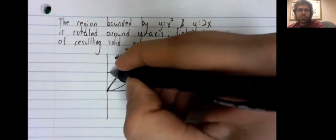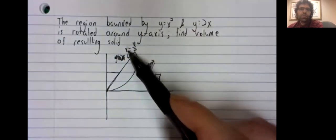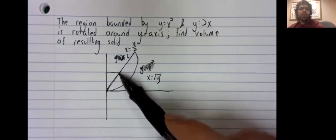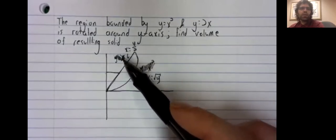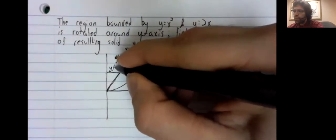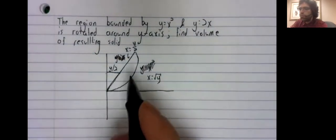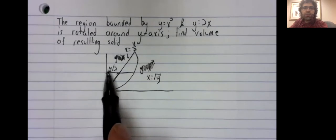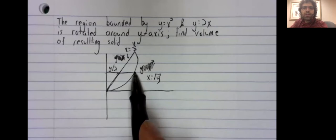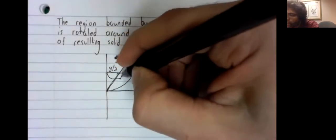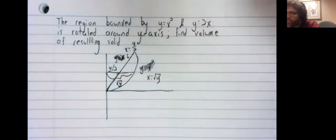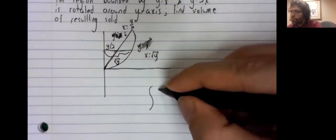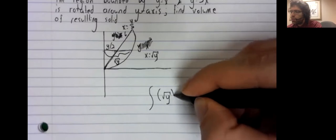Starting from the axis, we go over until we reach the region. Starting from x equals 0 and winding up at x equals y over 2 gives us a distance of y over 2. Keep going. Starting at x equals 0 and ending up at x equals the square root of y gives us a distance of the square root of y. So those are our outer and inner radii.